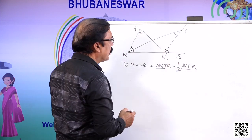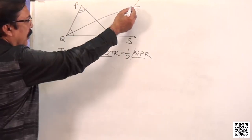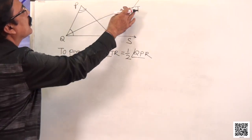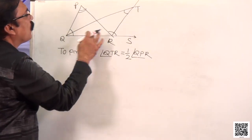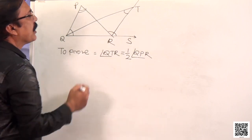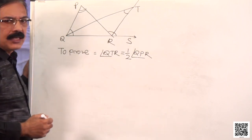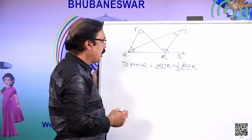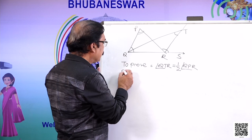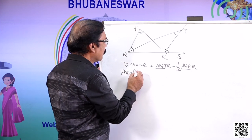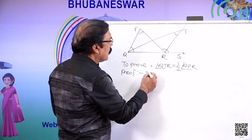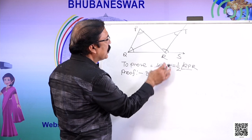PQR is a triangle which is extended to S. The bisectors of angle PQR and angle PRS meet at a point T. We have to prove that angle QTR is equal to half of angle QPR. In triangle QTR, angle TRS is the exterior angle.